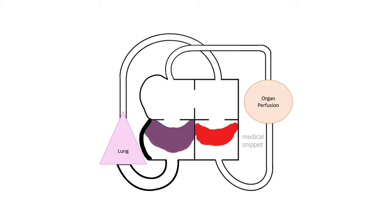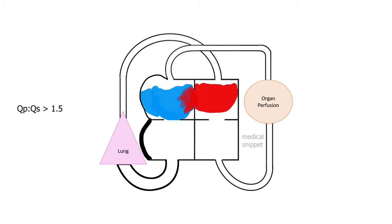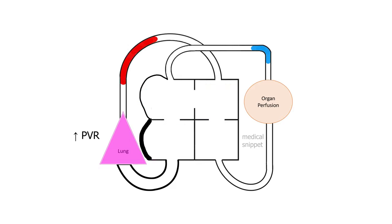The indication for atrial septal defect closure is when the pulmonary blood flow is more than 1.5 times the systemic flow. If the defect is left untreated, the pulmonary vascular resistance increases over time due to pulmonary artery remodeling to the increased pulmonary blood flow.